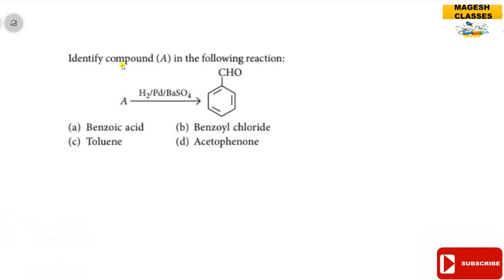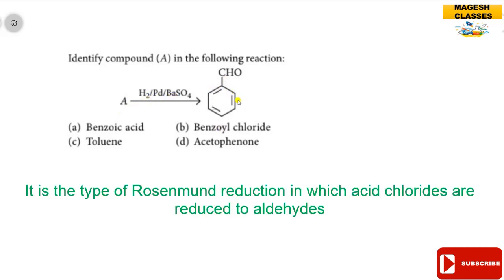Question number three: identify compound A in the following reaction. Compound A is treated with hydrogen and palladium coated with barium sulfate to give benzaldehyde as the product. Palladium is the reducing agent, and barium sulfate acts as a catalytic poison. This reaction is the Rosenmund reduction.